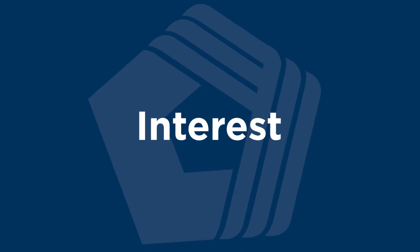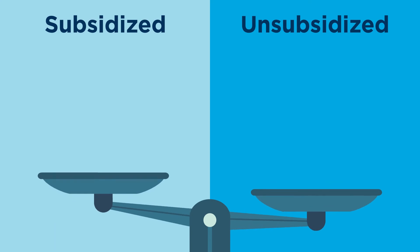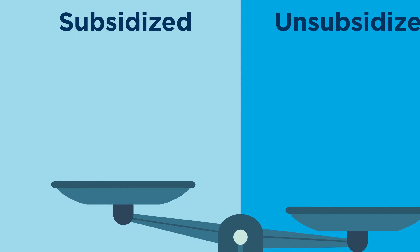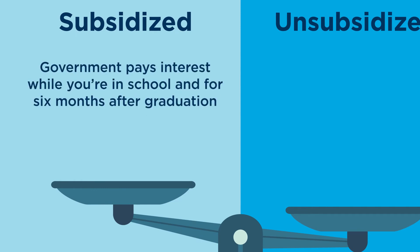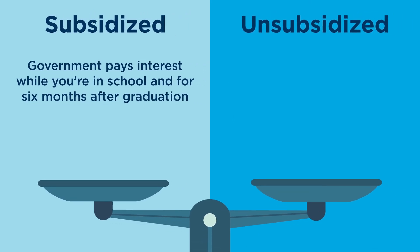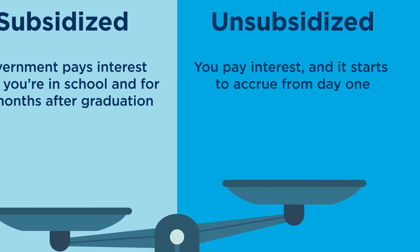The second difference is how each loan treats interest — this is where the terms subsidized and unsubsidized come from. With a subsidized loan, the government pays or subsidizes the interest while you're in school and for six months after you graduate. For an unsubsidized loan, you're responsible for paying all the interest, and it starts to accrue from day one.